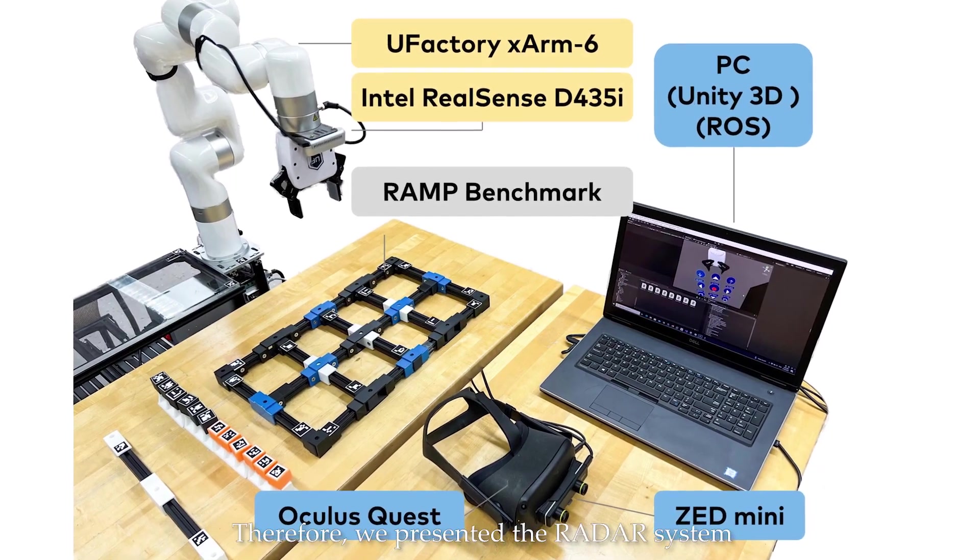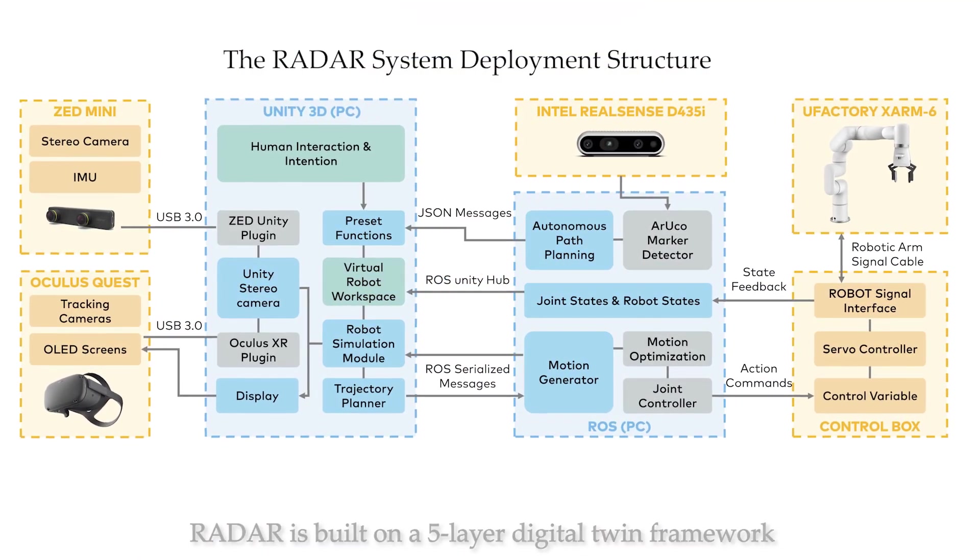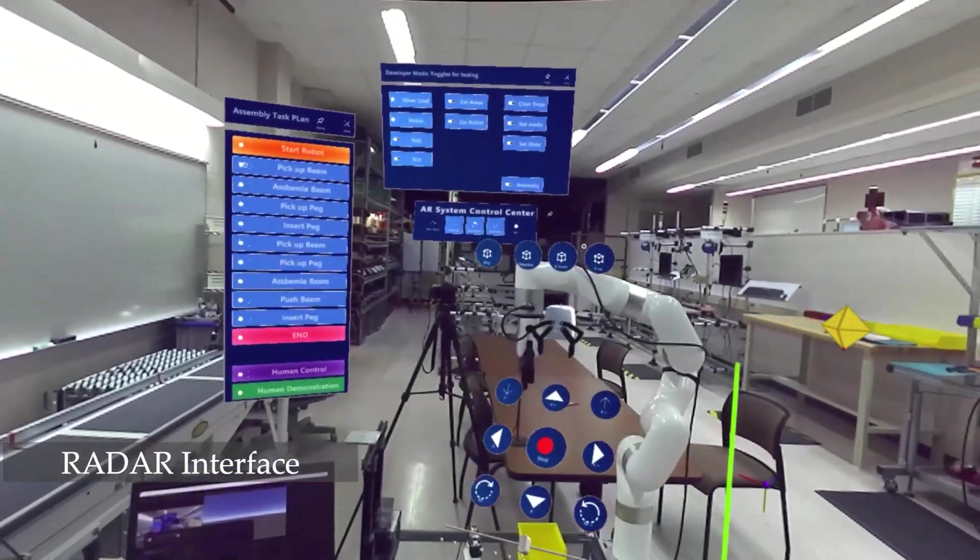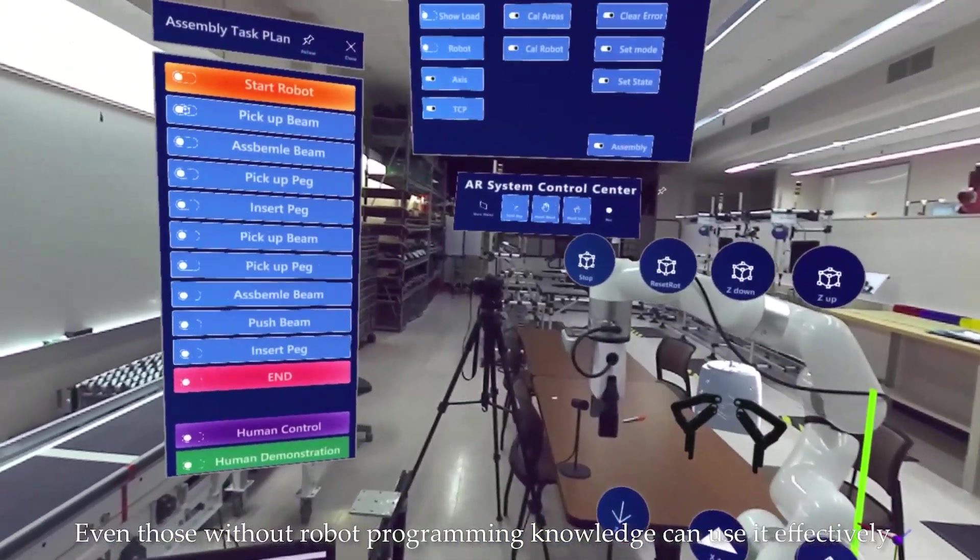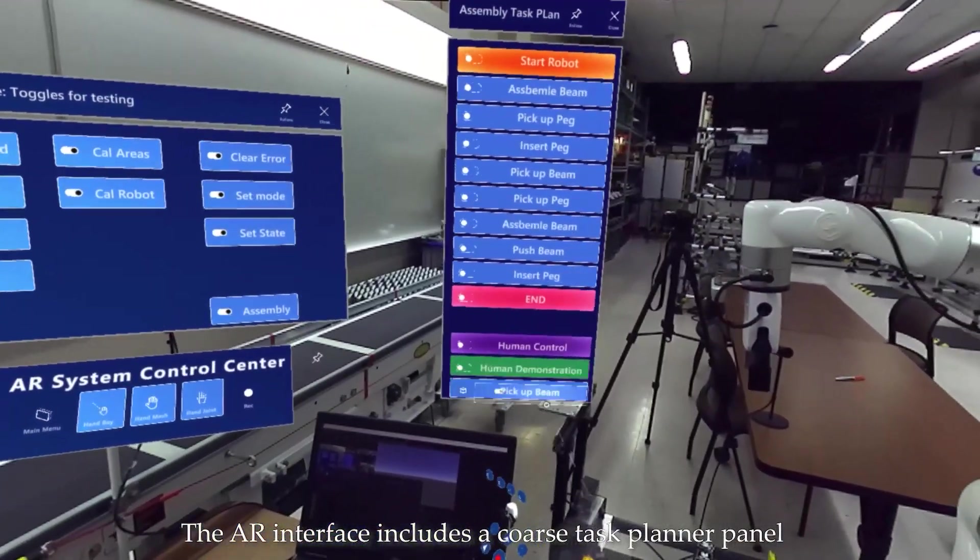Therefore, we presented the RADAR system. RADAR is built on a five-layer digital twin framework offering an intuitive augmented reality interface. Even users without robot programming knowledge can use it effectively. The AR interface includes a task planner panel allowing users to inspect and modify task management easily.